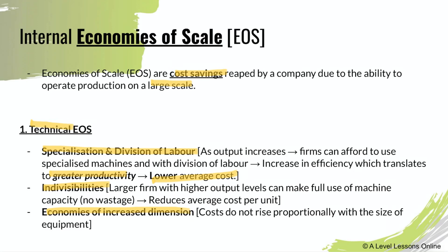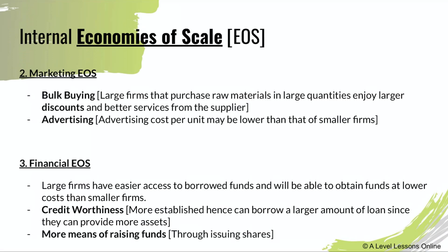The third type is economies of increased dimension — with an increase in the scale of equipment, costs do not rise proportionally with the size of that equipment. Essentially, costs do not rise proportionally with any increase in the amount of equipment being employed, because all equipment is being used very efficiently.